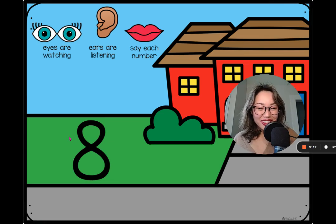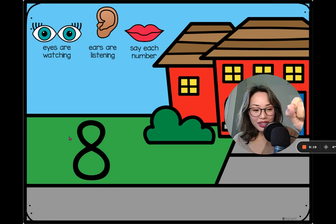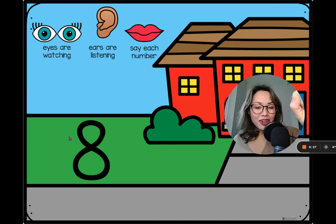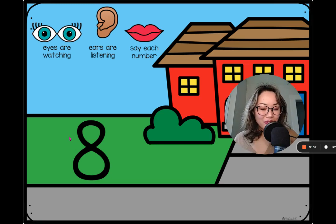Here's number eight. Number eight looks like a snowman. Or you can write it like this. Curve around like an S and finish by pulling it up. Or I have them write two circles one on top of the other before I show them a different way.